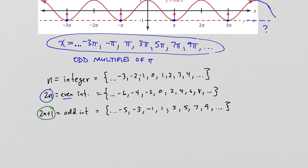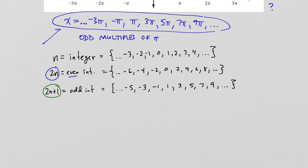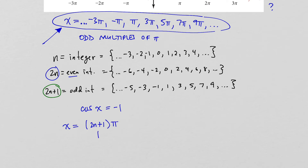So now, how can we describe all the places where cosine of x equals negative 1? We already said x must be an odd multiple of pi. An easy way to describe this is x = (2n + 1)π, where 2n + 1 is the odd number and you multiply by pi. This is the mathematical way to describe odd multiples of pi, where n is any integer. We'll talk more about that in the coming chapters.